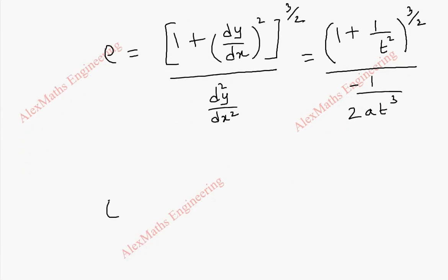By simplifying further, we have to take LCM. So this will become (t² + 1)/t². We have power 3/2. Let's take separately for this and separately for this.